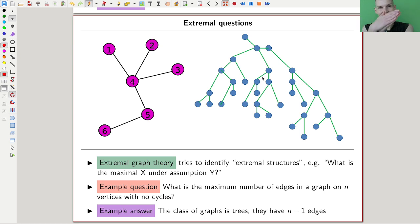Extremal graph theory, extremal network theory, whatever. The extremal part is best motivated by a tree, which is in some sense an extremal type of object. Extremal graph theory studies questions of the form: what is a maximal x under assumption y? What is the maximum or the minimum or whatever of the theory, the extreme points of the theory.